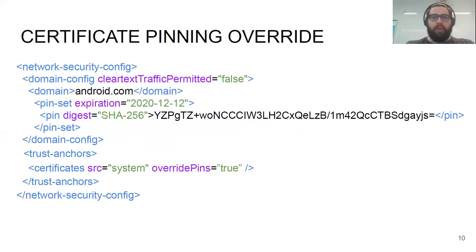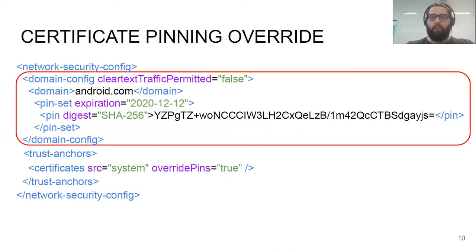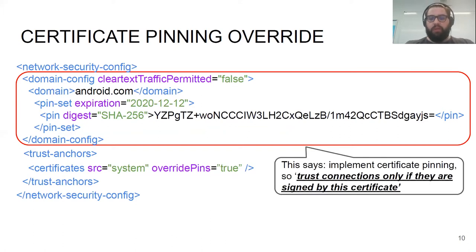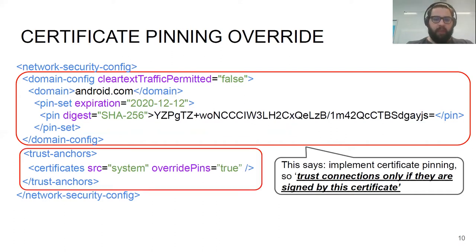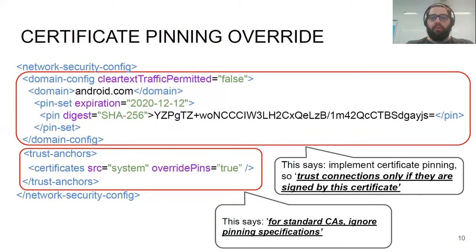A slightly more subtle weakness is when we try to configure a strict policy where we implement certificate pinning for one or several domains. This part of the configuration says that when we contact android.com, we only trust connections signed by a specific certificate. However, at the same time, we can configure the remaining part of the policy with override-pins set to true, meaning that for standard certificate authorities we bypass the certificate pinning specification. The combination of these two configurations makes the certificate pinning implementation useless, and no warnings are raised.